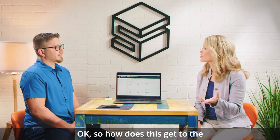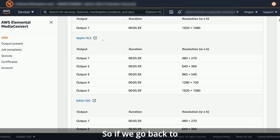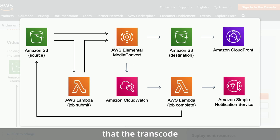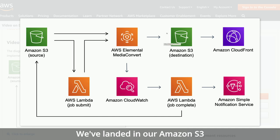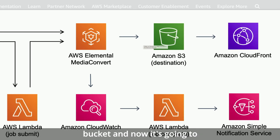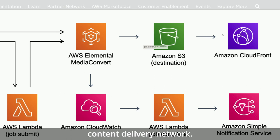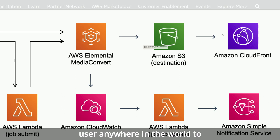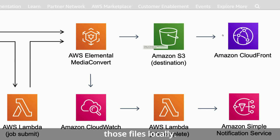How does this get to the end user? Going back to our architecture, once the transcode job is finished, the content lands in our Amazon S3 bucket and then goes to Amazon CloudFront, our global content delivery network, enabling any user anywhere in the world to access those files locally.